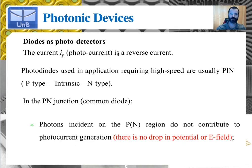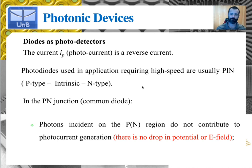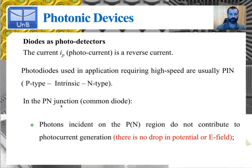The photocurrent IP is a reverse current — you do need to put the device in reverse bias. The photodiodes most often used in applications requiring high speeds are PIN devices, as opposed to regular PN junction diodes. In a PIN device, you do not have a regular PN junction; instead, you have a sandwich in which an intrinsic semiconductor is placed between the P-type and N-type materials. In the PN junction, all of the photons which impinge on the P-type and N-type regions do not contribute to photocurrent generation.